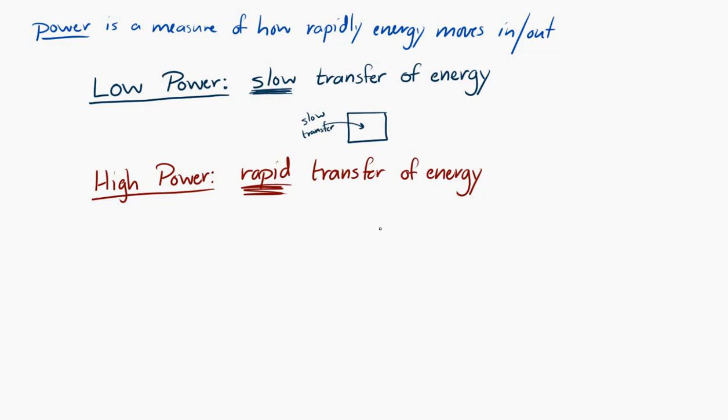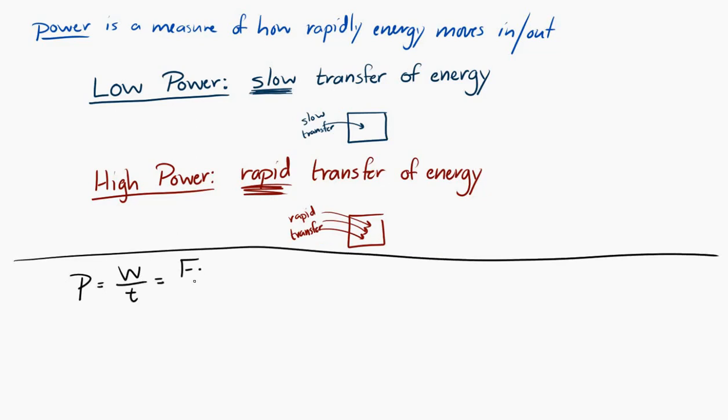Now, we can manipulate this power equation to come up with another useful equation. So power is the work per time. Well, work is the force on an object times the displacement of the object times the cosine of the angle between the force and the displacement. So let's write it that way. And if we rearrange things a little bit, force times displacement over time times the cosine of theta.